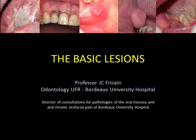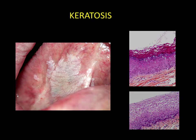Basic lesions correspond to changes in morphology or tissue colour. The primary manifestation of these basic lesions, and certainly one of the most common, is mucosal keratosis. This is characterised by a white colouration of the oral mucosa that is slightly elevated and cannot be detached from the underlying tissue.